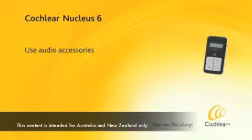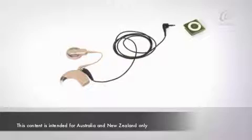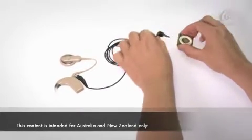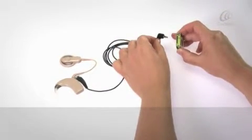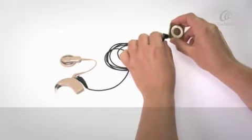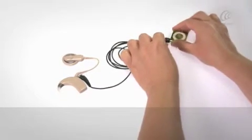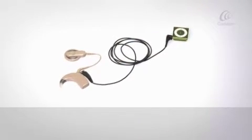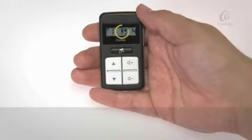Use audio accessories. When you connect an audio accessory to your CP910 sound processor, the accessory will turn on automatically and your remote control will display the accessory icon.